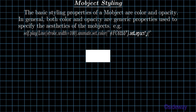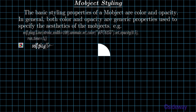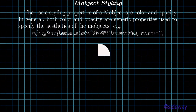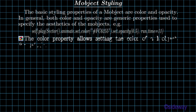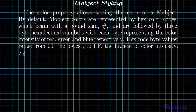self.play, line, stroke_width=100, dot.animate.set_color(#fc6255).set_opacity(0.5), run_time=14. self.play, sector, dot.animate.set_color(#fc6255).set_opacity(0.5), run_time=11. The color property allows setting the color of a mobject.